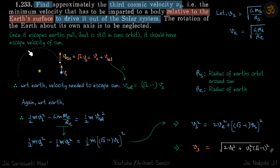So now let's read a bit. So once it escapes earth's pull, but it's still in sun's orbit, actually it's not in sun's orbit, but it is still at a distance Rs. So this distance is Rs. So when it has just escaped earth, we are assuming that it is still at the same distance Rs. So then at that moment, it should have the escape velocity of the sun, that is root 2Vs.